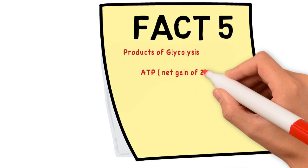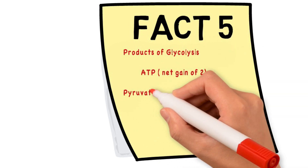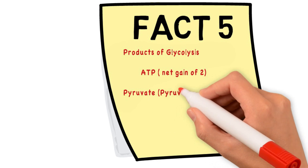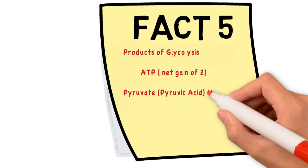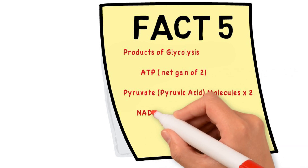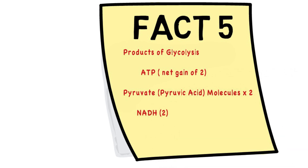Fact five: the products of glycolysis are ATP — only a net gain of two ATP molecules — two molecules of pyruvate or pyruvic acid, and two NADH molecules.